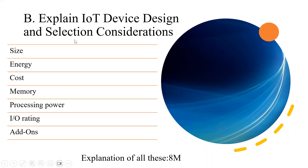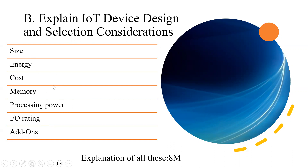Explain IoT device design and selection consideration. We design IoT devices and sensors based on the application. The considerations are: size, energy, cost, memory, processing power, input-output rating, and add-ons. First write down all these items, then explain each one — how the size should be, how energy should be managed, why cost is a consideration, and so on. All these points with explanation will give you eight marks.